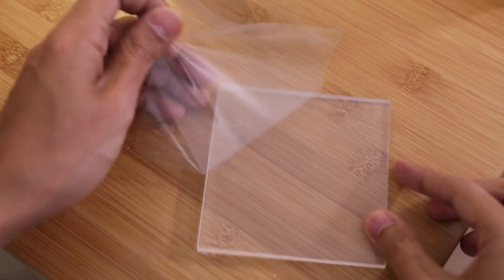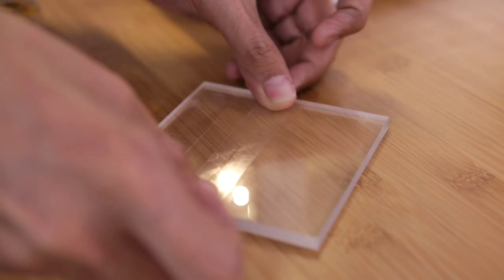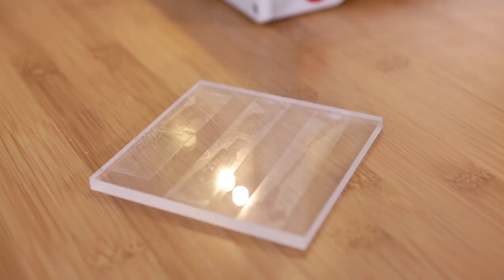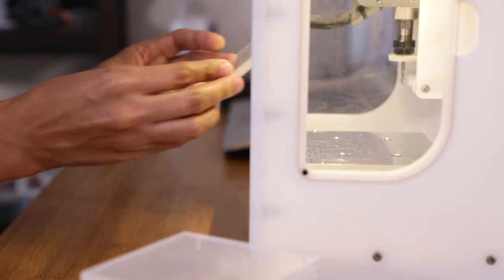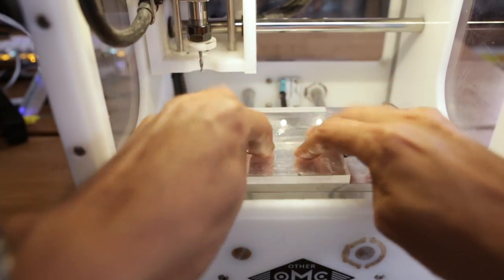I removed the protective film from both sides of the stock and applied a few strips of double sided scotch tape. Then proceeded to secure the acrylic to the spoilboard, making sure to align it to the lower left corner.